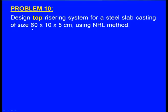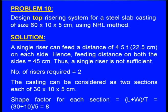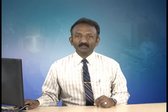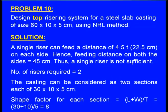Problem: design a top risering system for a steel slab casting of 60 × 10 × 5 cm using the NRL method. A single riser can feed a distance of 4.5T = 4.5 × 5 = 22.5 cm on each side, so total feeding distance = 45 cm. Since the casting length is 60 cm, a single riser is not sufficient. Number of risers required = 2.